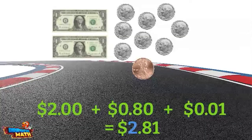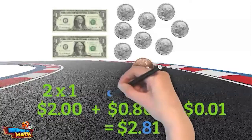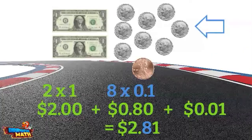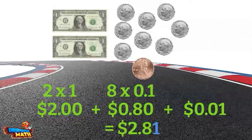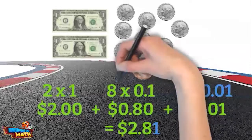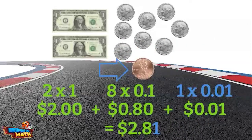Looking at this number, there is a two in the ones place — it has a value of two times one, or two. There is an eight in the tenths place — it has a value of eight times one tenth, or eight tenths. Remember those eight dimes: each has a value of one tenth, and together they have a value of eight tenths. There is a one in the hundredths place — it has a value of one times one hundredth, or one hundredth. Remember that one penny — it has a value of one hundredth.